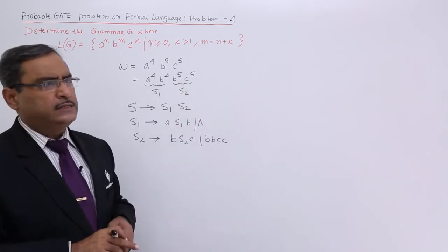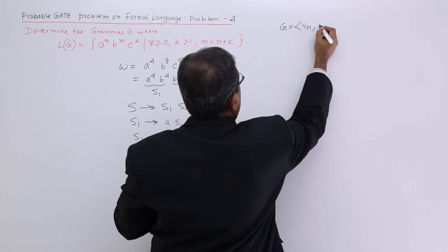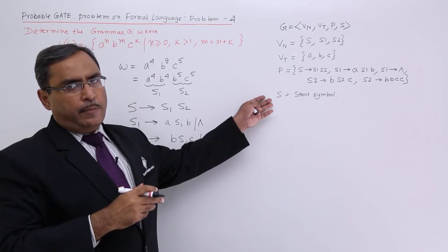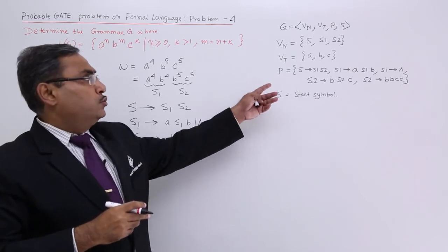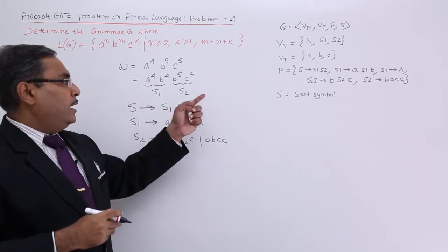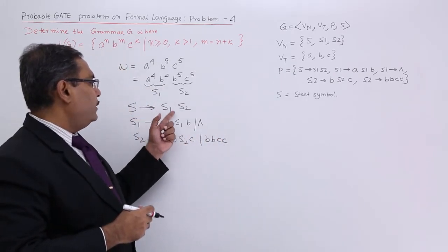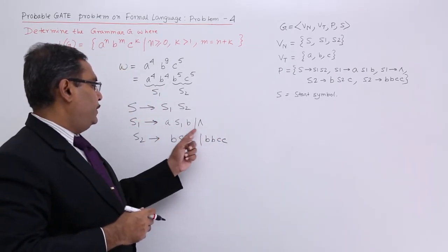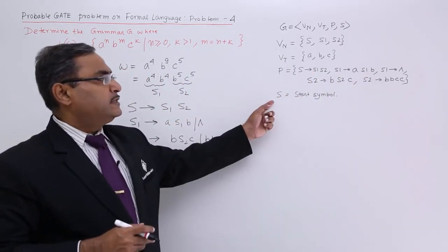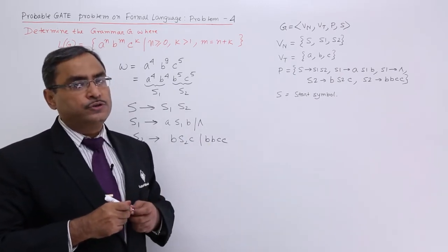And Vn Vt P S, you can easily write, no issues. So g is equal to Vn Vt P S. I have written this one in this way, the grammar can also be defined. That is my s, s1, s2. There are 3 non-terminals. Terminal symbols are a b c, we know this. And how many production rules are there? 1, 2, 3, 4, 5. I have written all of them. And this is my start symbol. So it is not a problem to write the respective grammar if you know the production rules.